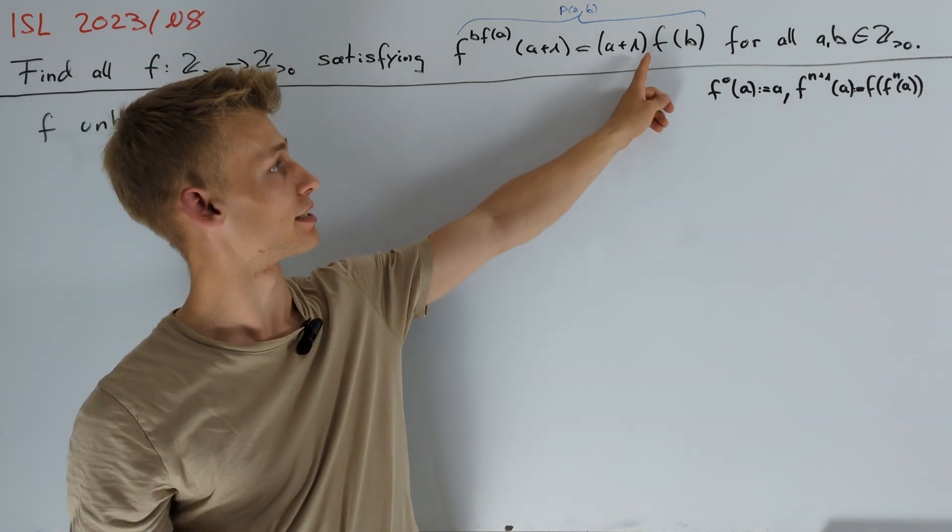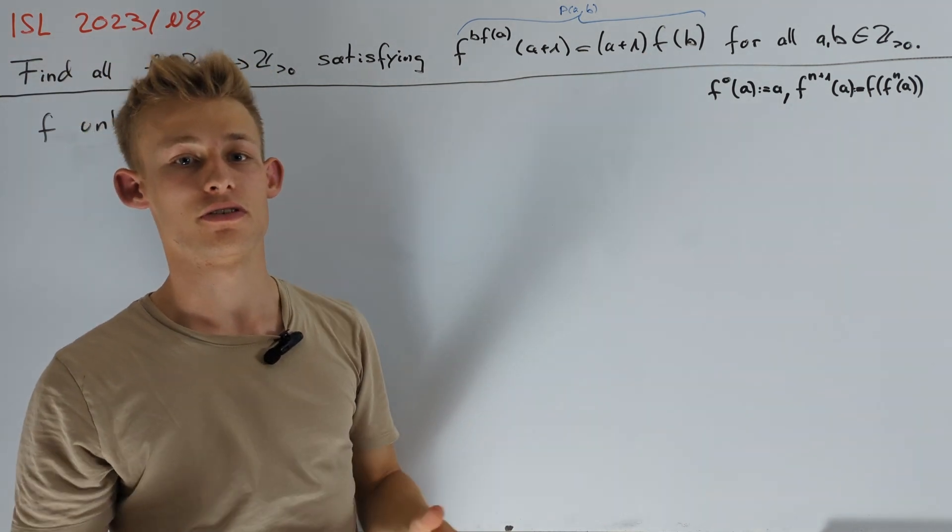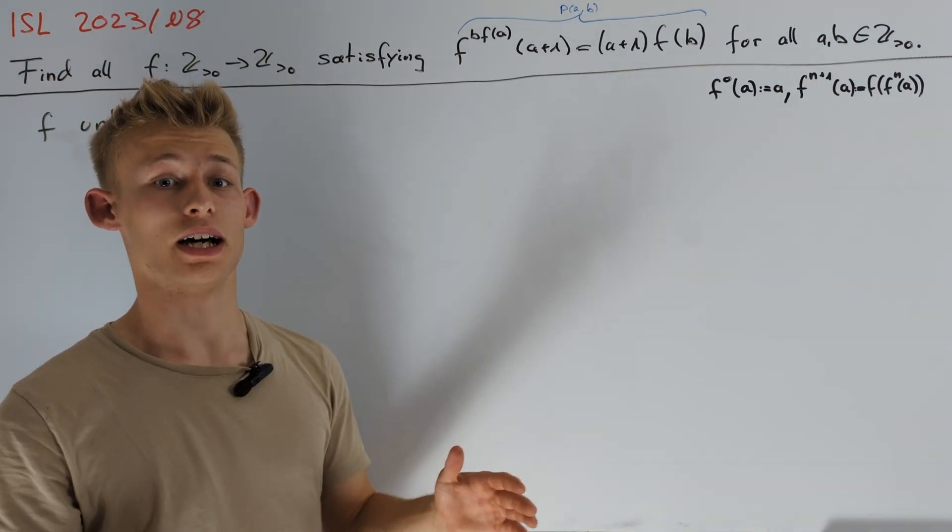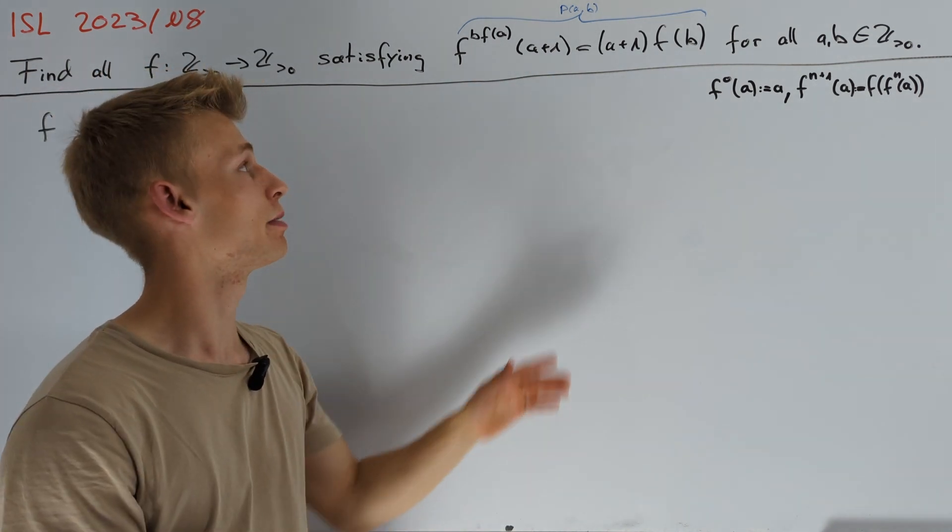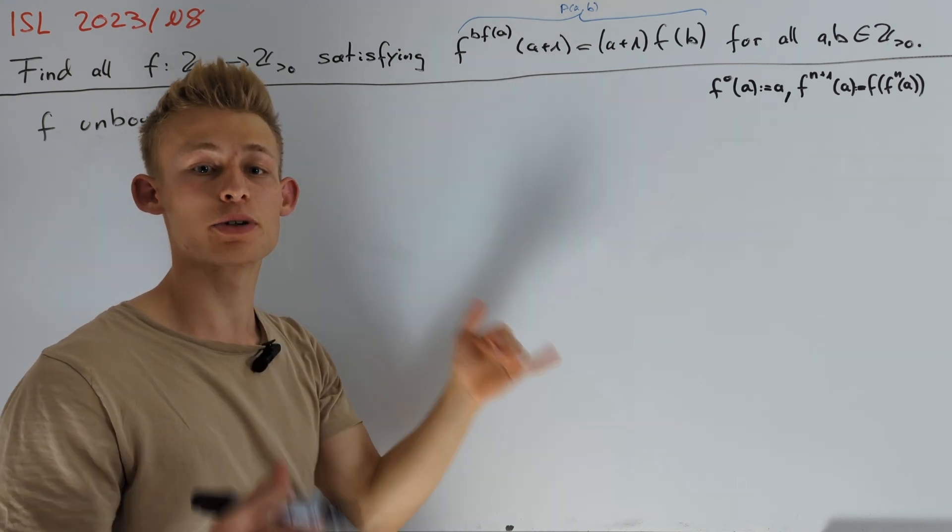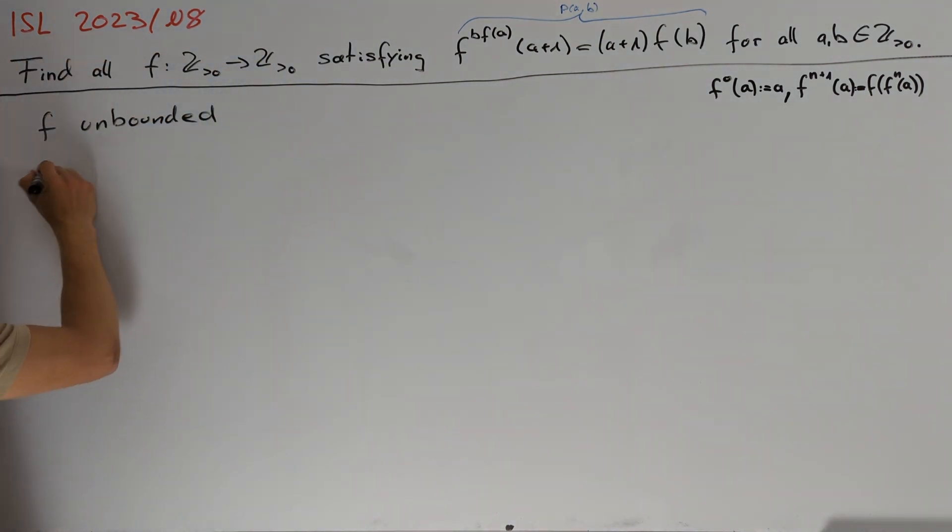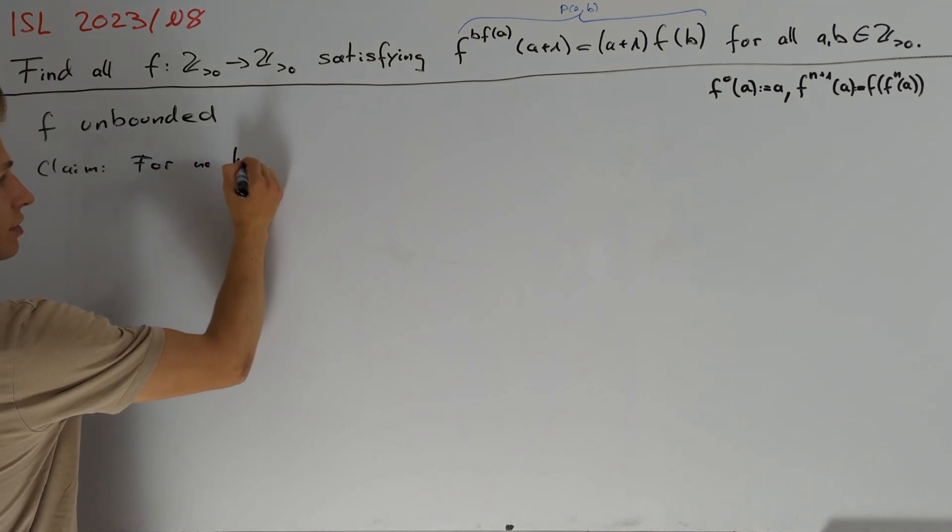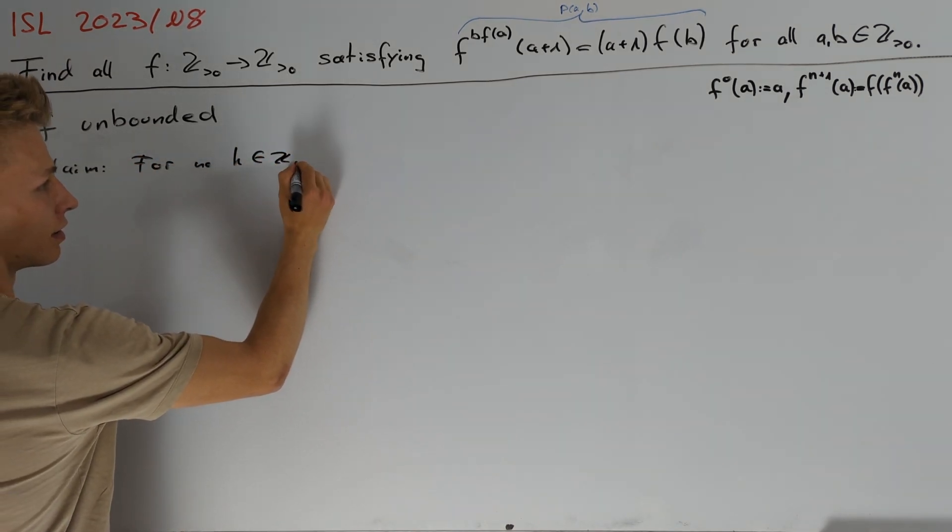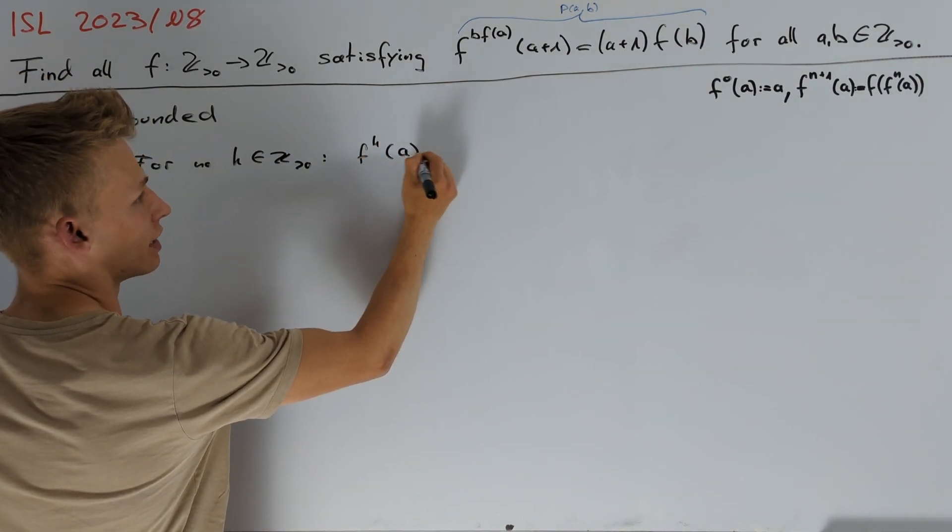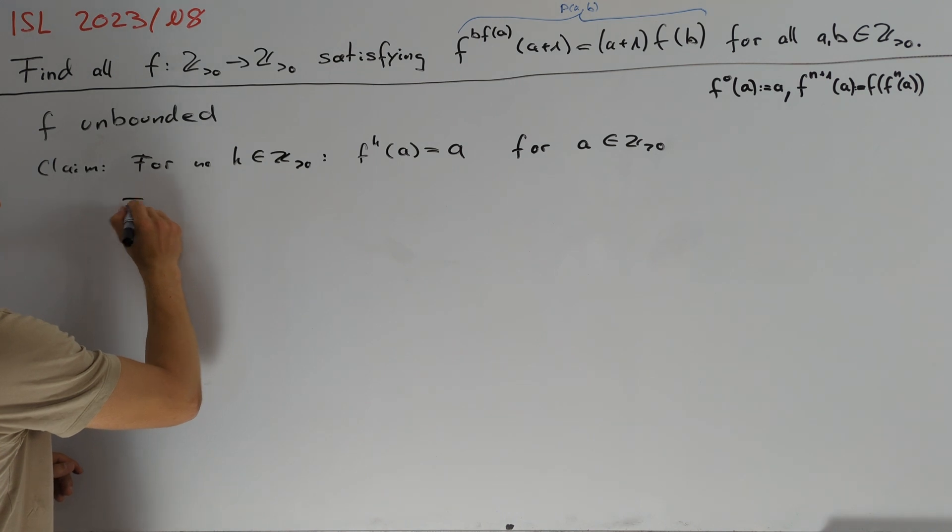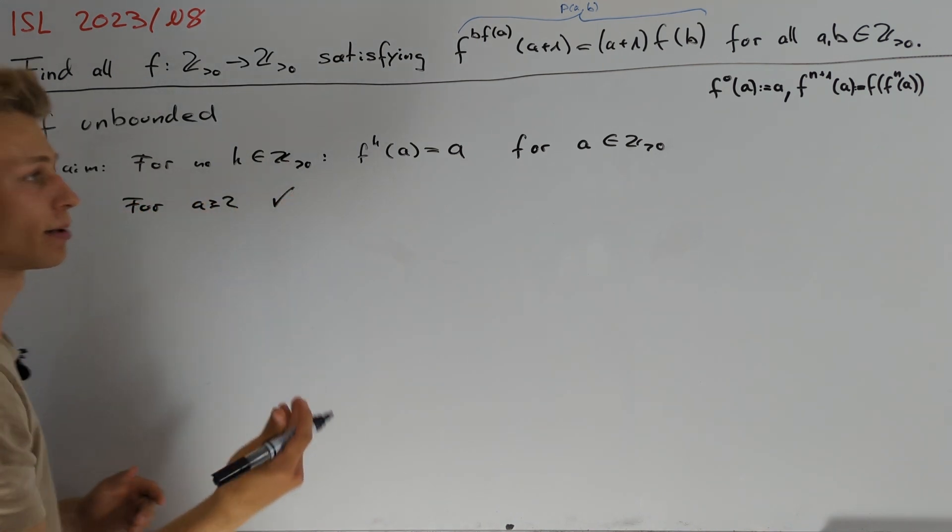This allows us to make the right hand side of our equation arbitrarily large for constant a+1. In particular, after applying f on a+1 for a certain number of times, we can't end up at a+1 again. This brings us to the slightly more general claim that for no k in the positive integers, we have that f^k(a) = a. For a ≥ 2, we are already done as I described before.